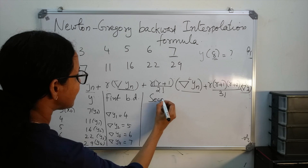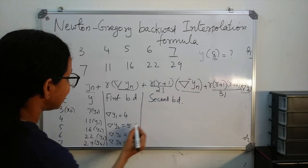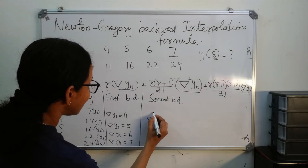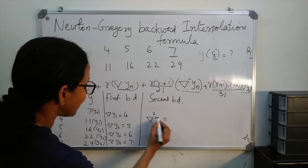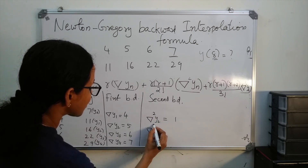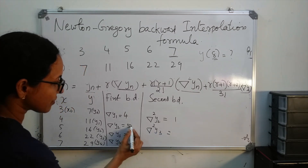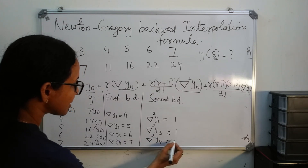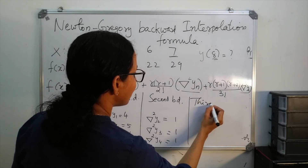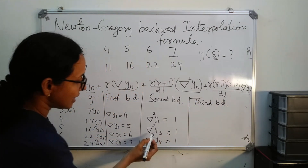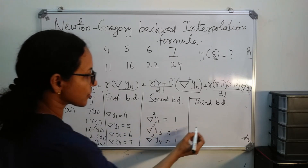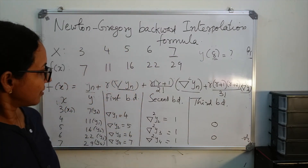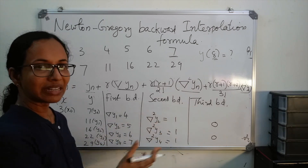Next, second backward differences: backward delta squared y2 = 5 - 4 = 1, backward delta squared y3 = 6 - 5 = 1, backward delta squared y4 = 7 - 6 = 1. Then third backward differences: backward delta cubed y3 = 1 - 1 = 0, and that term is also 0. So we get only two columns in our difference table.